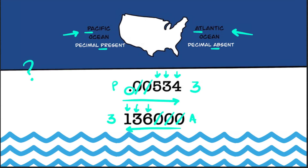Now that we know how to find the number of significant digits in a number, how do we apply these to mathematical operations?